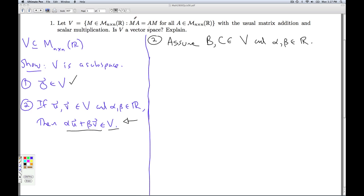I have to show that if I take that matrix times any other matrix, it's the same as taking the matrix and the matrix product in the opposite order. Okay? So let's write out a little more clearly. What does B and C being in V give us? Then B times A equals A times B and C times A equals A times C for all n by n matrices A.